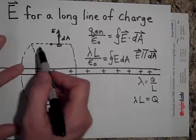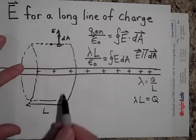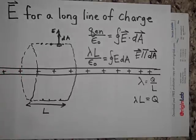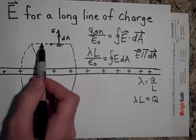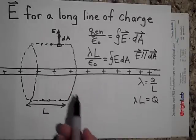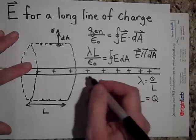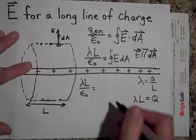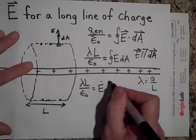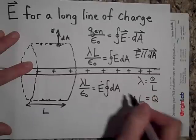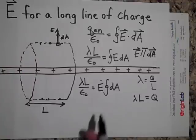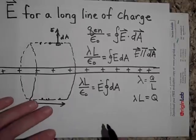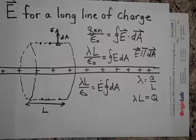Do you see how we can make the argument that E is the same here as here as here as there? Because of symmetry arguments — why would we expect E to be stronger at one point than another? They're all the same distance away, so we can pull E out of the integral because E is uniform at all points on this surface.